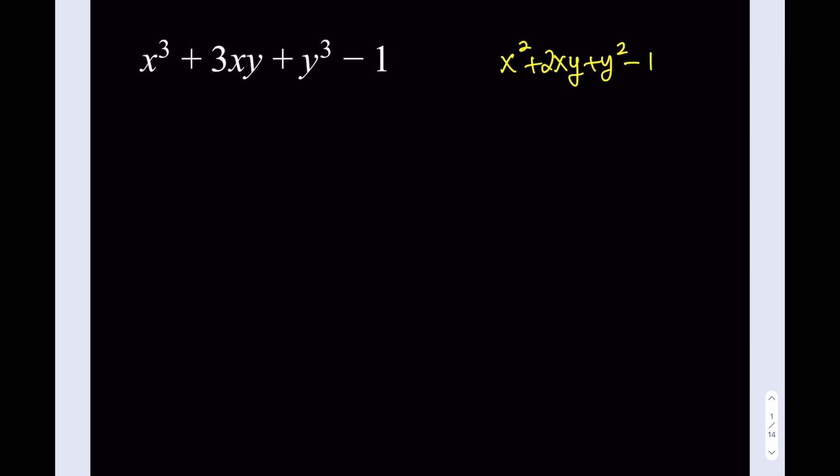If you replace the 3's by 2's everywhere, then you get a difference of 2 squares. So does that mean that we get a difference of 2 cubes here? Well, not directly, right? So we're going to have to do something about it.